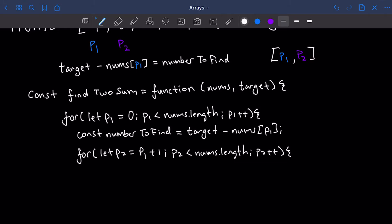Now that we have p1 and p2 as well as our number to find, we have to check and see if the number at p2 is equal to this number to find. We can do that with an if block and say if nums at p2 is equal to number to find, then we want to return an array of p1 and p2. Remember, p1 and p2 are pointed to the indices, which means that once we actually have found the solution, we're just going to return an array of those two indices.